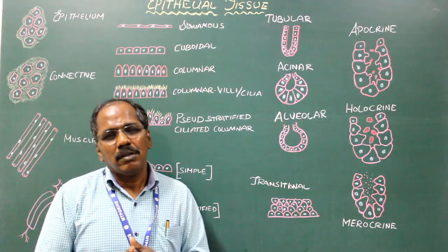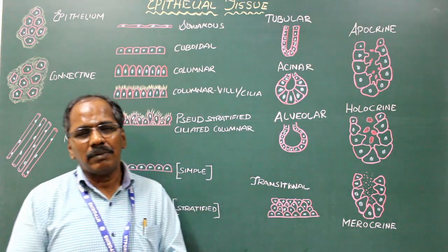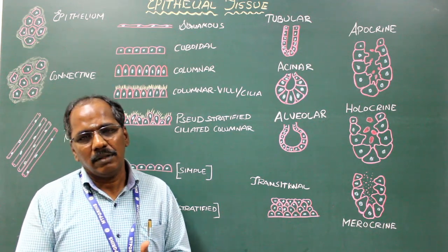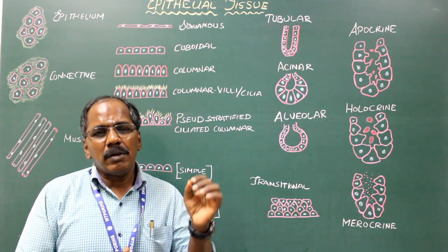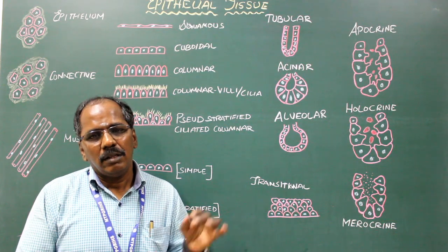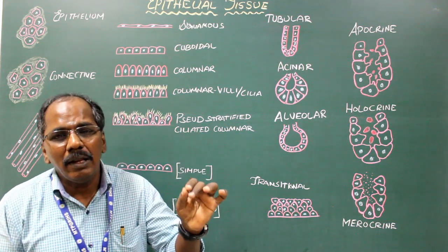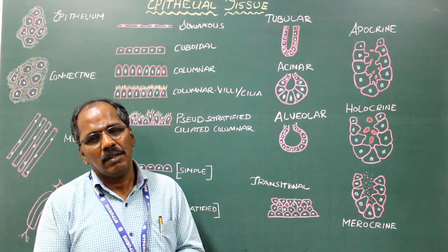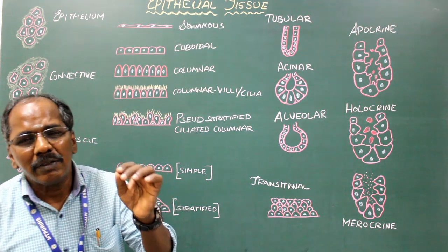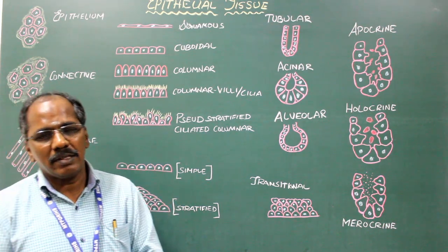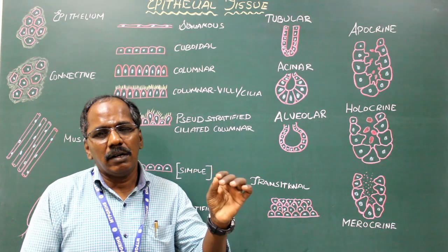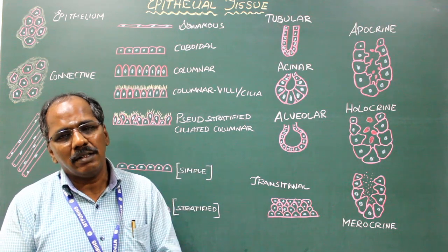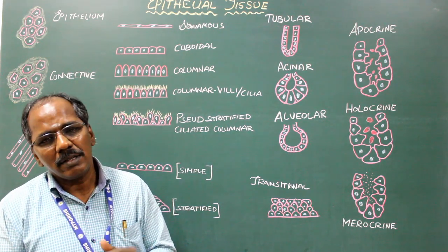There are two more special types of epithelial cells: neuro-epithelial cells and myo-epithelial cells. Neuro-epithelial cells are epithelial in origin with a sensory function — example: cells of taste buds. Myo-epithelial cells are epithelial in origin with a specialized function of contraction — example: sweat glands and mammary glands.